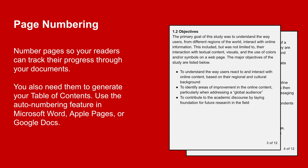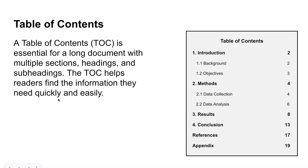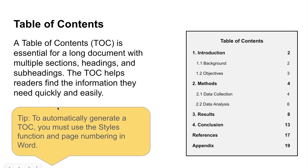You also need to use page numbers so you can generate your table of contents automatically. You should use the auto-numbering feature in your word processor. To generate the table of contents, you'll need to use some other key features of your word processing programs. The table of contents is essential for a long document that has multiple sections, including headings and subheadings, and will help readers find the information they need quickly and easily. As a tip, you should always automatically generate your table of contents using the styles function and page numbering in your word processor.